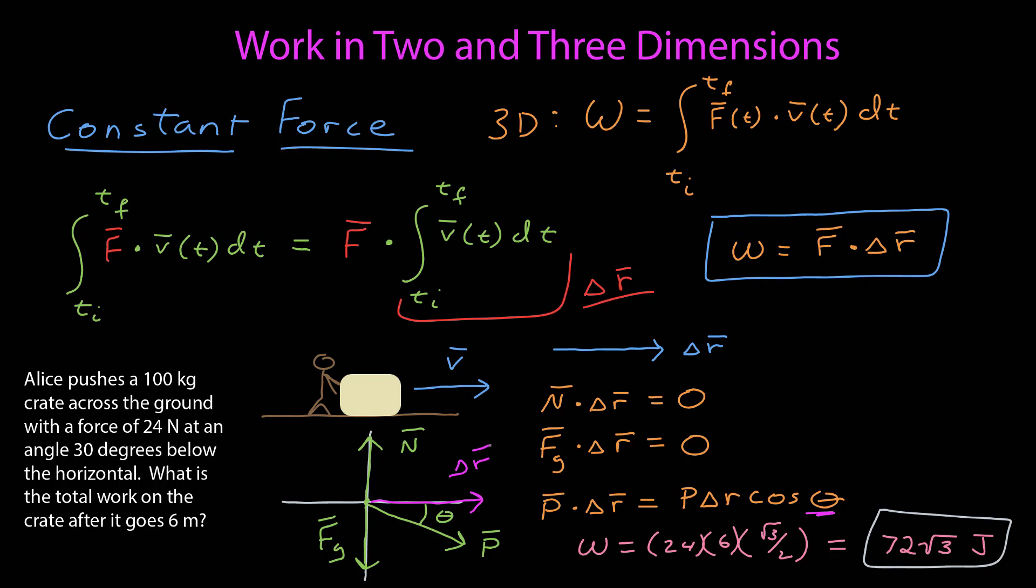The work on an object is given by this expression, which is called a path integral. To really take advantage of that, we need to know more vector calculus, and we'll look at that in some later videos. But at the moment, what's most important to us is the identification that it's 0 when the force is perpendicular to the velocity, and we can derive a very simple form for the work when the force is constant.